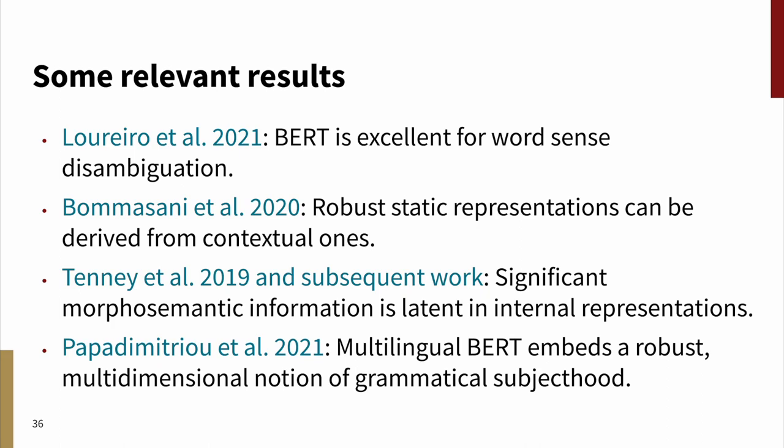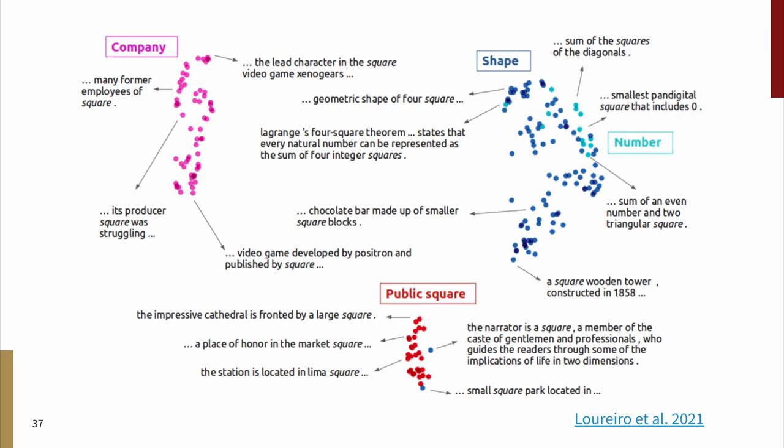And Papadimitriou et al. 2021 showed that multilingual BERT embeds a robust, multidimensional notion of grammatical subjecthood, which I think could be really exciting to explore further in the context of alternating verbs like English break. So we have a lot we can build on already, and I'm sure there's lots more inspiring work out there that linguists could make good use of and even participate in. Here's a plot from Loureiro et al. to help you give you a sense for the potential here when it comes to doing lexical semantics in these contextual embedding spaces. The focus is the word square, and these authors process lots of texts that manifest different senses of square, and those senses are reflected in the resulting contextual representations for this word, right? These representations cluster intuitively based on semantics, and they may even capture underlying sense-spanning information related to shared conceptual metaphors and the like that exist across these senses.